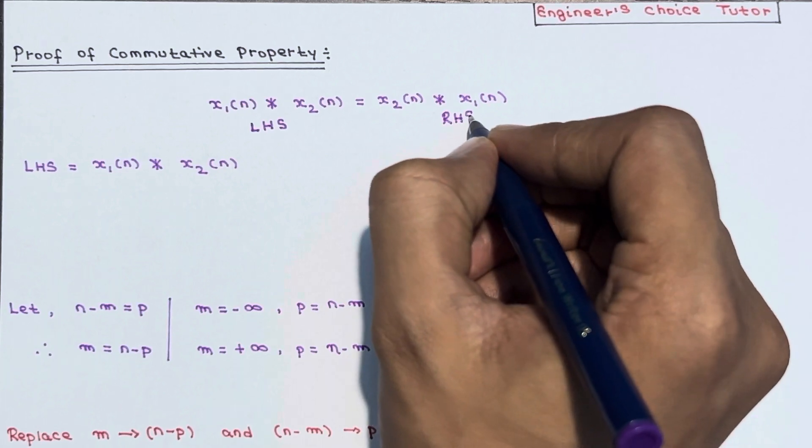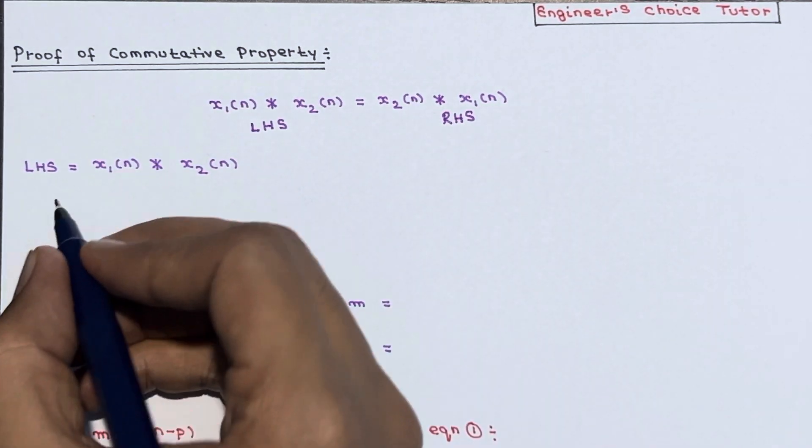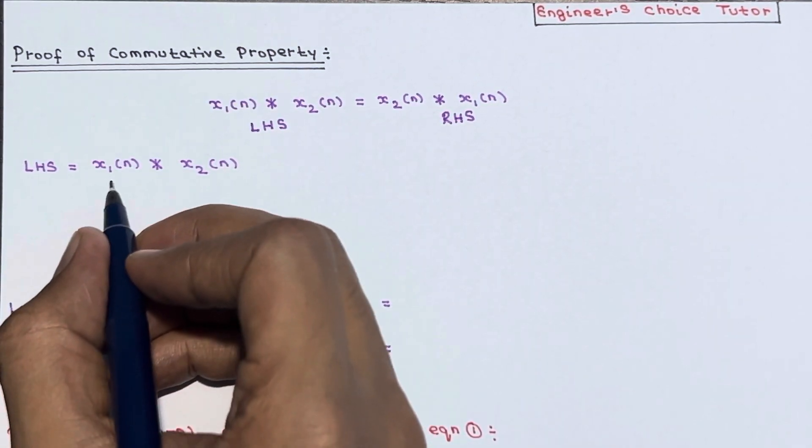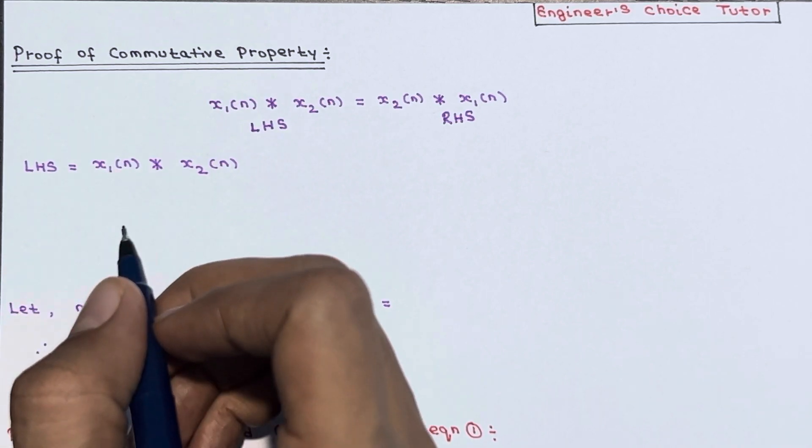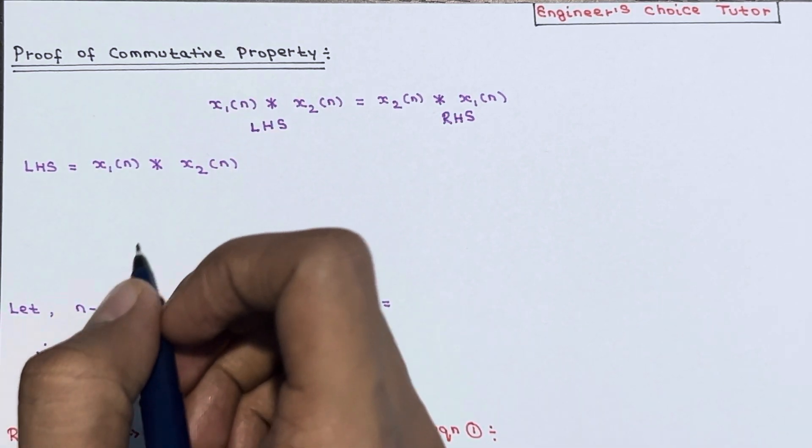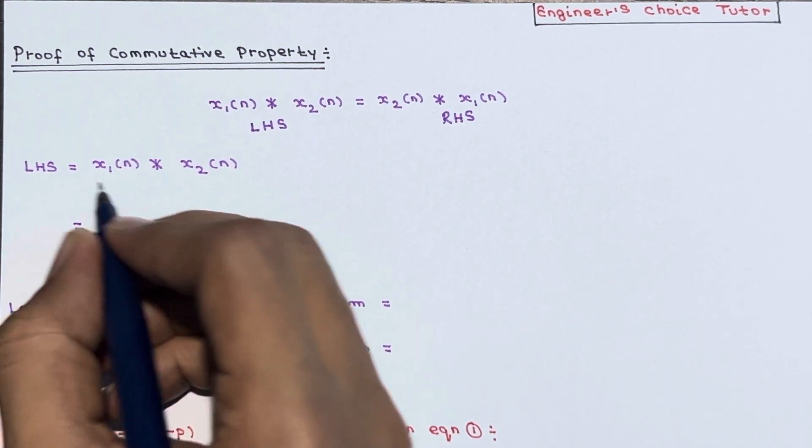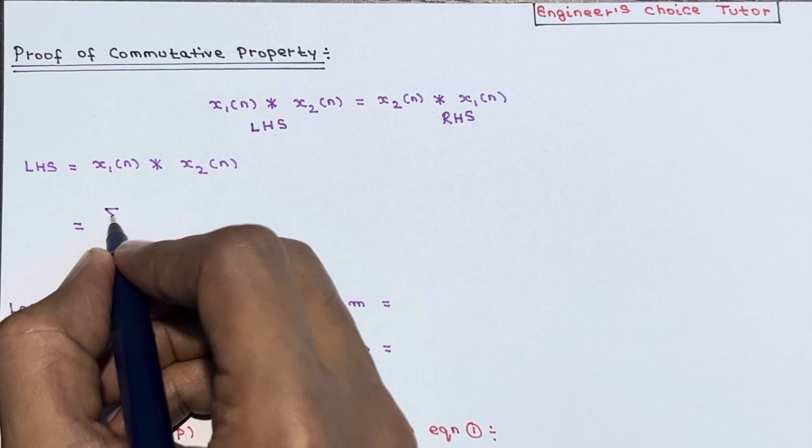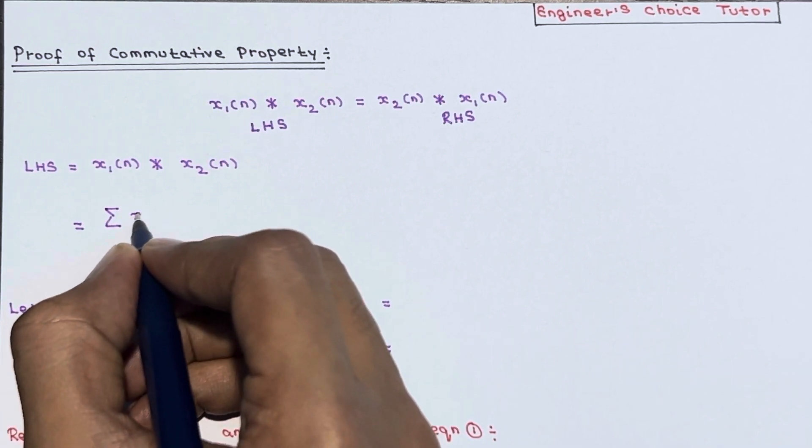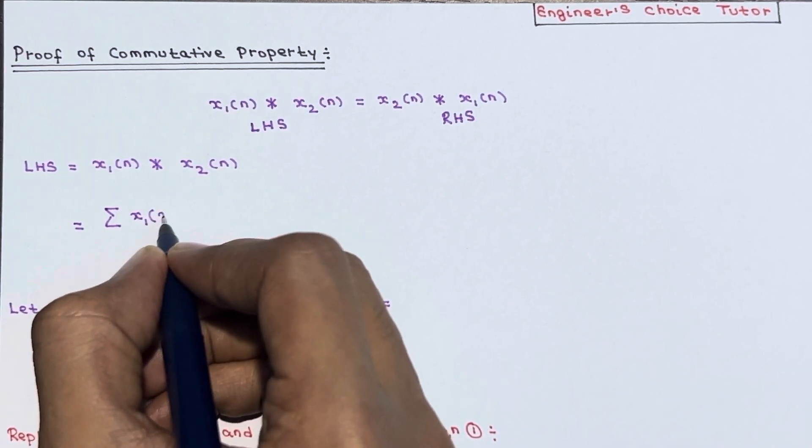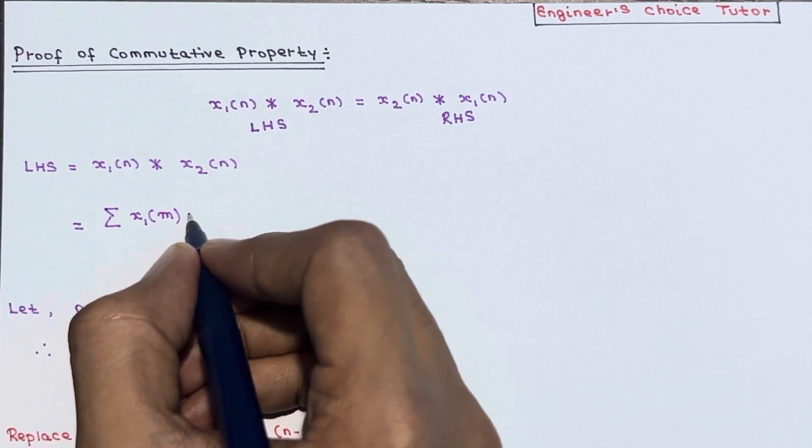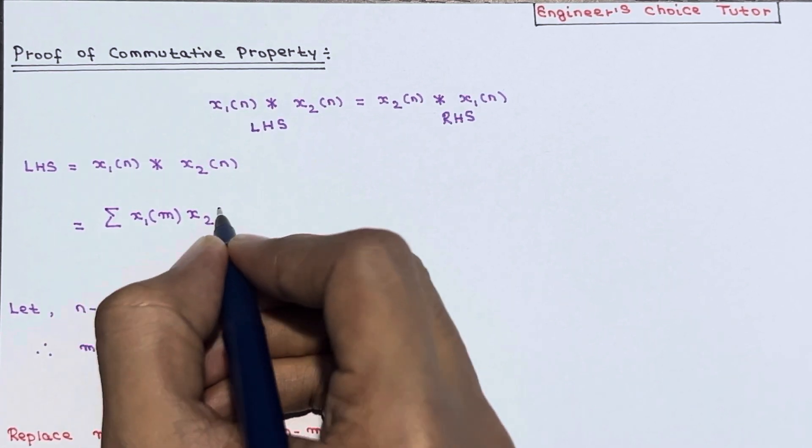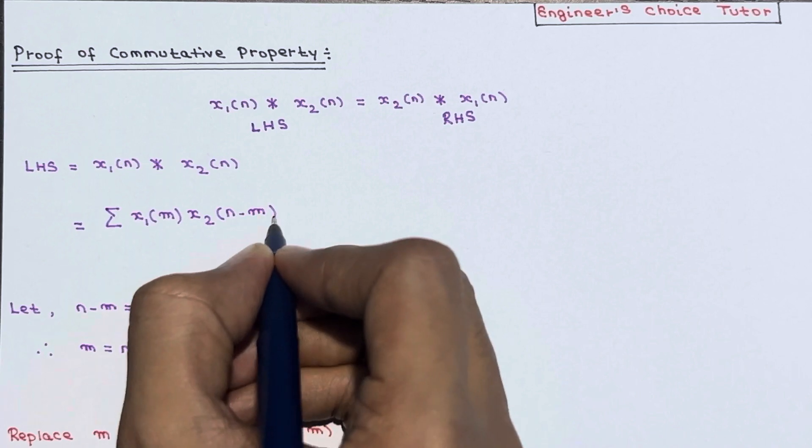So let's start from LHS. What is LHS here? Convolution of x1(n) and x2(n). So what is the formula? Convolution of x1(n) and x2(n) equals summation of x1(m) into x2(n-m).